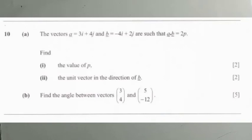All right, so this is question 10. Let's go by reading question A. The vectors A is equal to 3i plus 4j and B is equal to negative 4i plus 2j are such that A dot B, or the dot product of A and B, is equal to 2p. We find the value of P. So how do we find the value of P here?